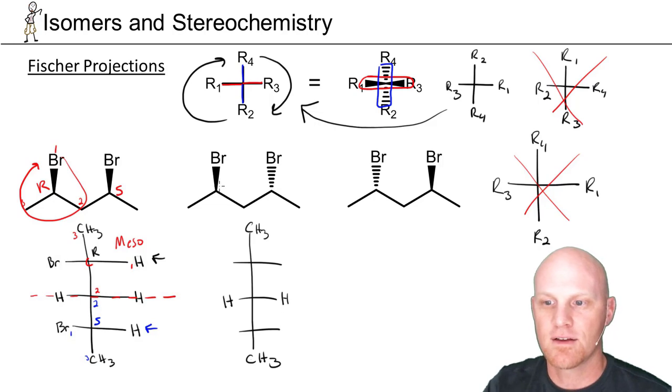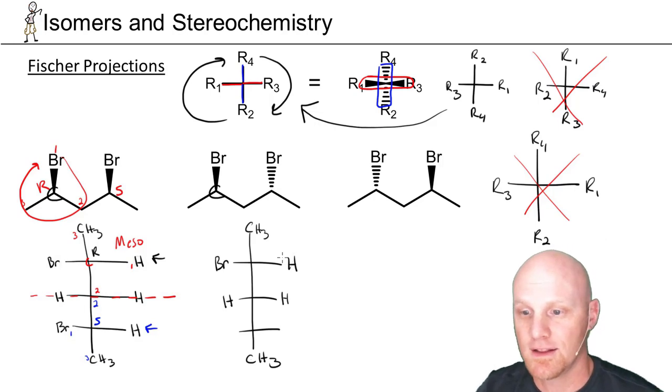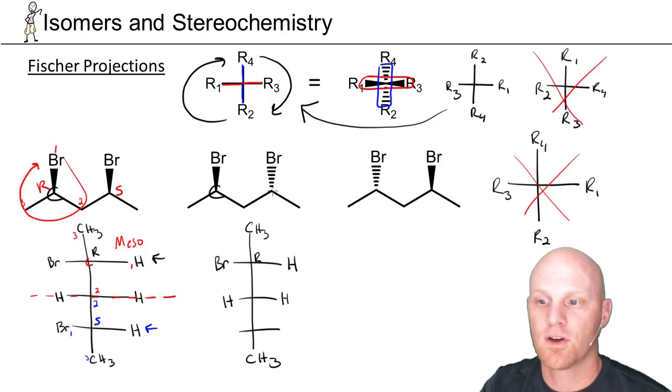I can see that this carbon right here is in the same configuration as this one right here, and so I'll draw it in the same configuration. And it's still going to be R. But this carbon right here is in the opposite one of the previous molecule, and so I'll put it in the opposite configuration. I'll put the bromine on the right, the hydrogen on the left.